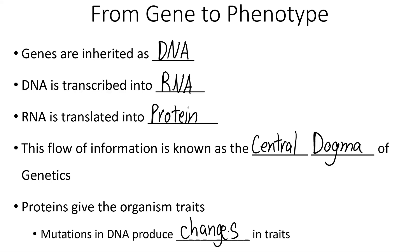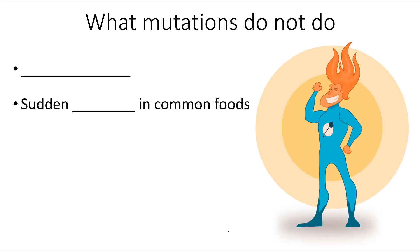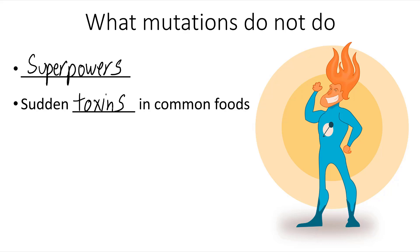So what is it that mutations do? One thing they do not do is give an individual superpowers. A mutation isn't going to cause an individual to suddenly be significantly faster than they were, or to have super control over the weather, or the ability to fly, or anything like that. Another thing that mutations aren't going to do is suddenly produce toxins in common food items. Those aren't the types of mutations that you need to worry about.